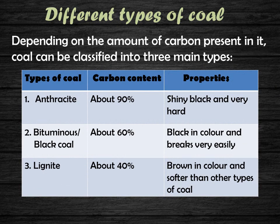Depending on the amount of carbon present in it, coal can be classified into three main types. Anthracite contains about 90% carbon; it is shiny black and very hard. Bituminous, also called black coal, contains about 60% carbon; it is black in color and breaks very easily. Lignite contains about 40% carbon; it is brown in color and softer than other types of coal. Anthracite is the best grade coal with the highest concentration of carbon, followed by bituminous and then lignite.